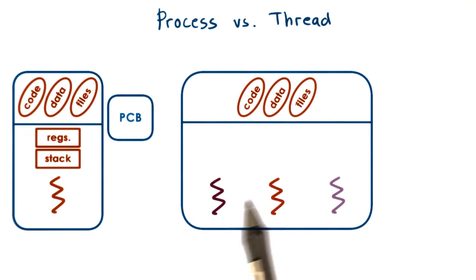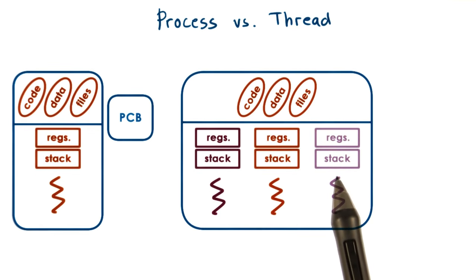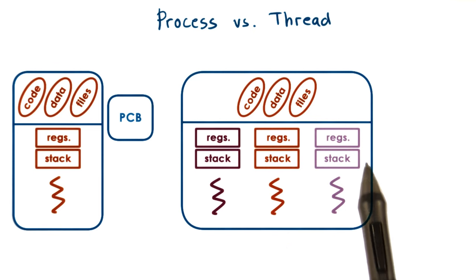However, they will potentially execute different instructions, access different portions of that address space, operate on different portions of the input, and differ in other ways. This means that each thread will need to have a different program counter, stack pointer, stack, and thread-specific registers.